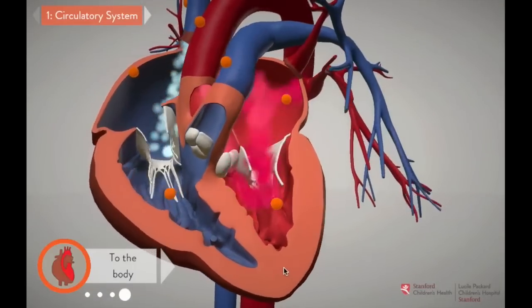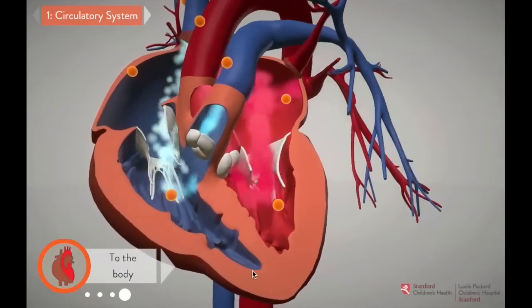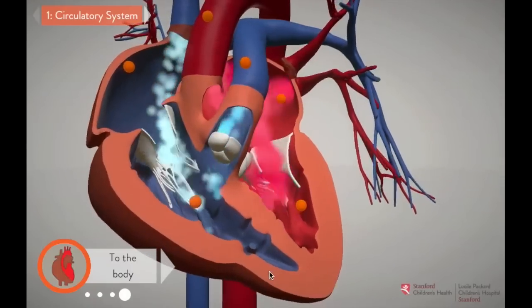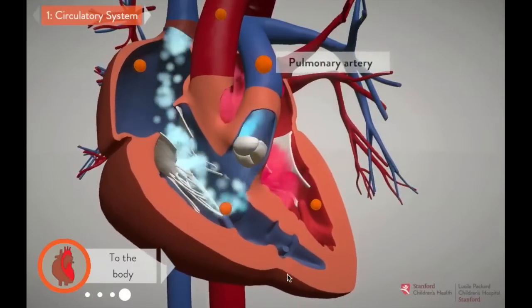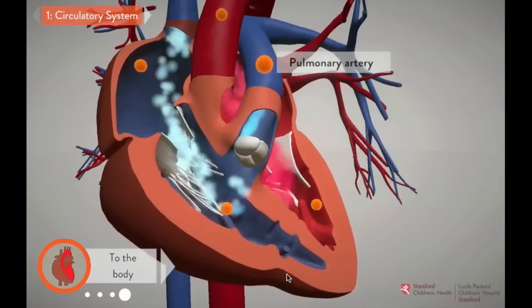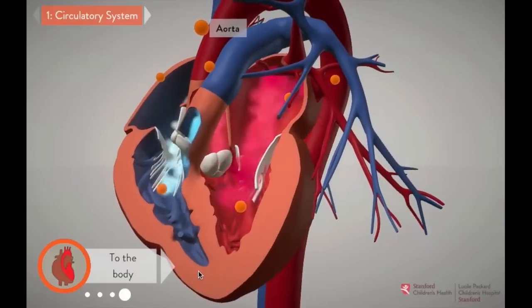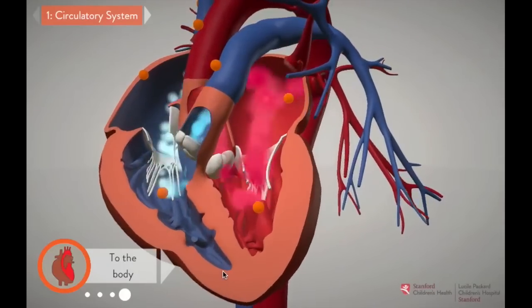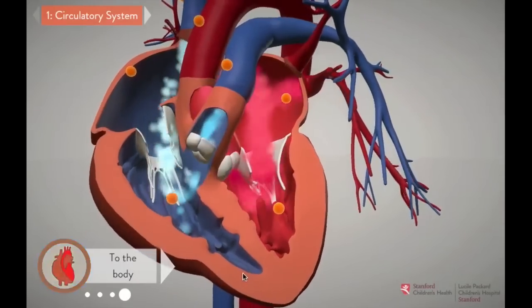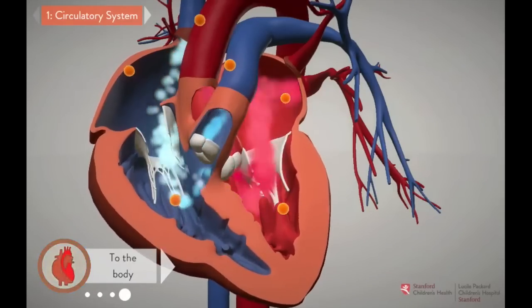In a healthy heart, the left and right sides work in unison. As the heart beats, it pumps blue blood to the lungs to get more oxygen, and red blood out to the body to bring oxygen to the tissues. These two loops of the circulatory system are separated, which helps the heart move blood very efficiently.